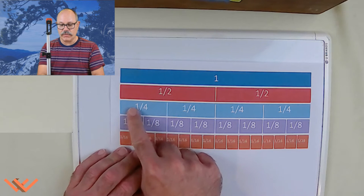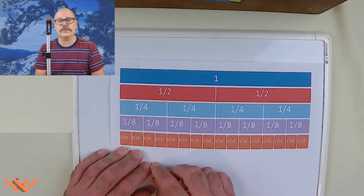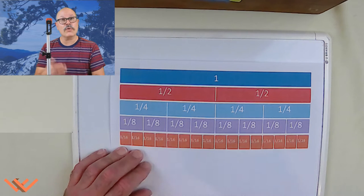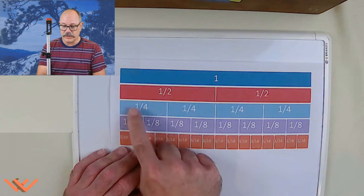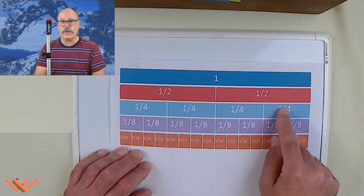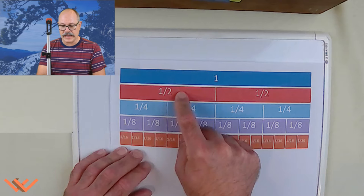Next line down, I have one slash four. That stands for one fourth. Or sometimes it's called one quarter. Like a quarter dollar. Because you take four quarters to make one dollar. So I have one, two, three, four fourths make one whole. And two fourths make one half.